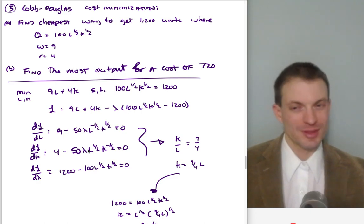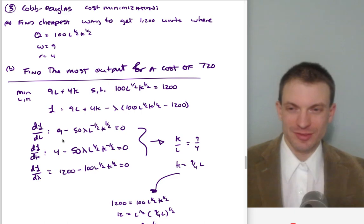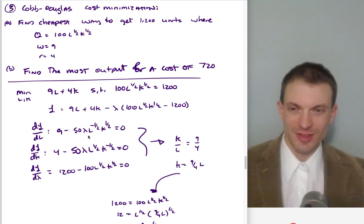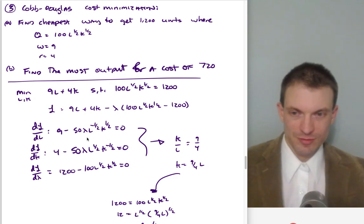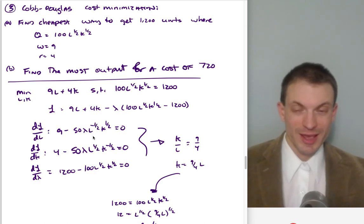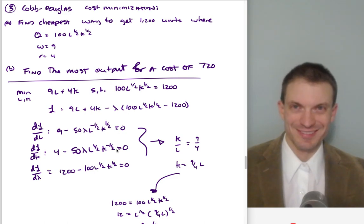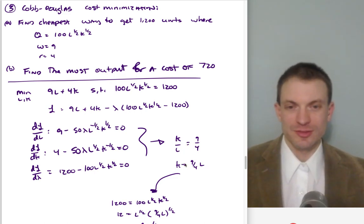Rather than solving each equation for lambda separately, we can divide them. On the left we get our ratio of input prices; on the right we get our MRTS, the ratio of marginal products. The 50 and lambda cancel, giving us 9/4 equals K/L. Solving for K, we get the tangency condition.